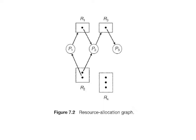Given this resource allocation graph, if the graph contains no cycle then no process in the system is deadlocked. If the graph does contain a cycle then deadlock may exist. If each resource type has exactly one instance, then a cycle implies a deadlock has occurred. If a cycle involves only resource types each having a single instance, then a deadlock has occurred, and each process involved in the cycle is deadlocked. In this case, a cycle is both the necessary and sufficient condition for the existence of deadlock.